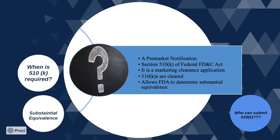Moving on to 510(k): what is a 510(k)? A 510(k) is a pre-market notification. The reason it is referred to as 510(k) is because it refers to Section 510(k) of the Federal Food, Drug and Cosmetic Act. It is a marketing clearance application, and 510(k)s are cleared when FDA determines the substantial equivalence of the device.